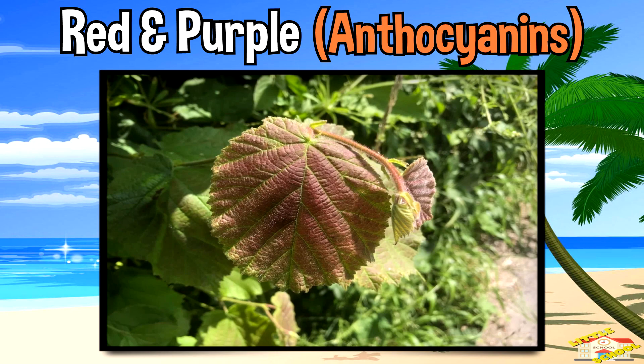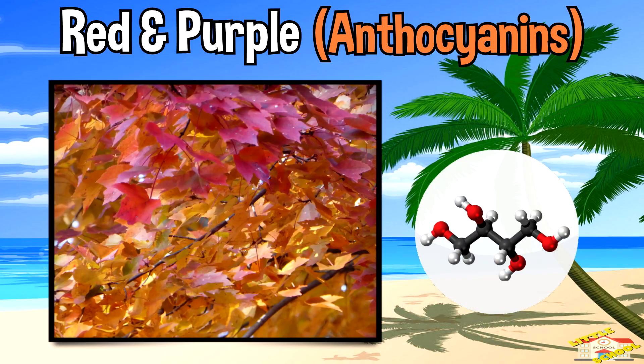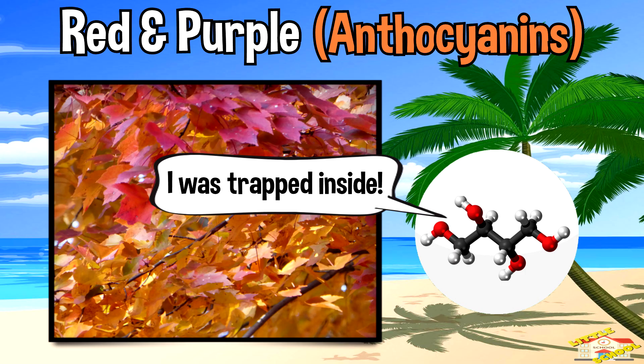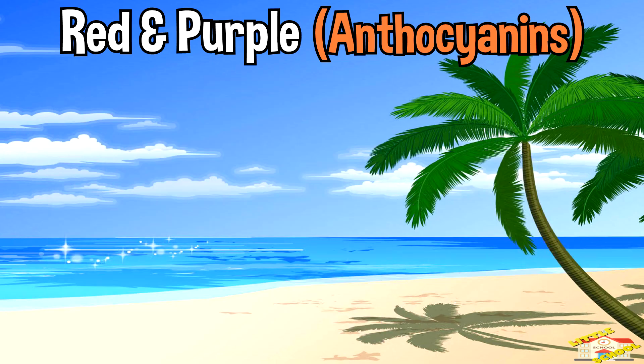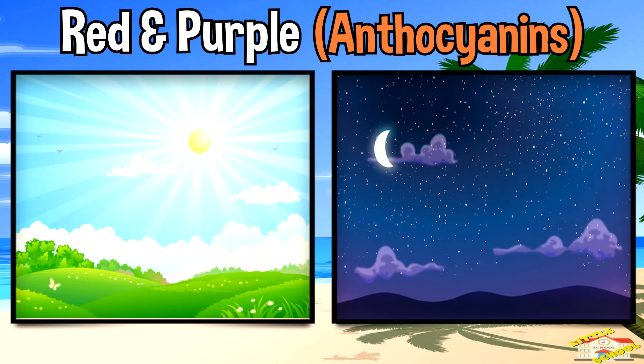Red and purple are anthocyanins. These pigments are made in fall from sugar trapped in the leaves. Bright sunny days and cold nights help create more red and purple colors.